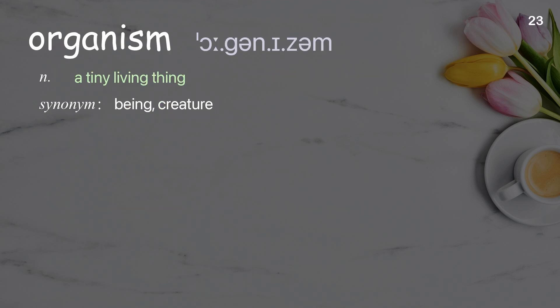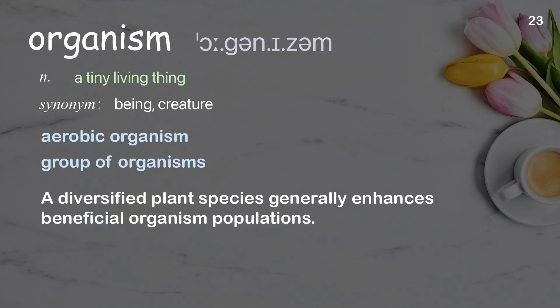Organism: A tiny living thing. Examples: aerobic organism, group of organisms. A diversified plant species generally enhances beneficial organism populations.